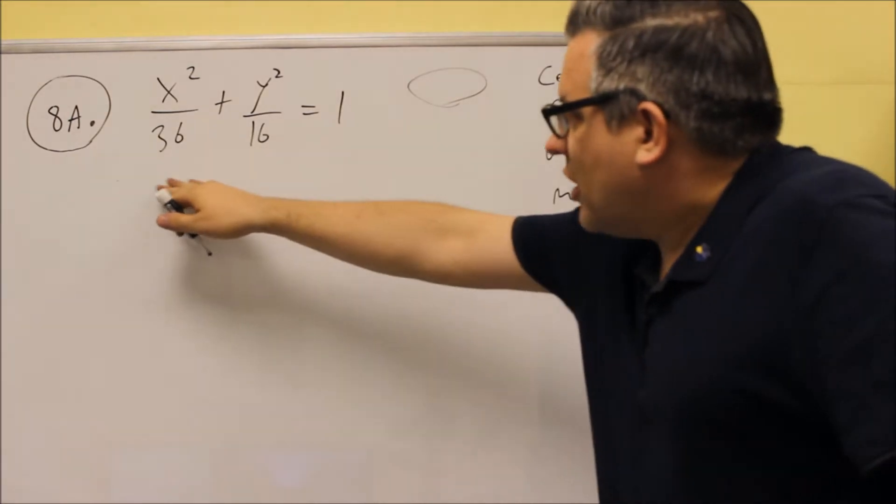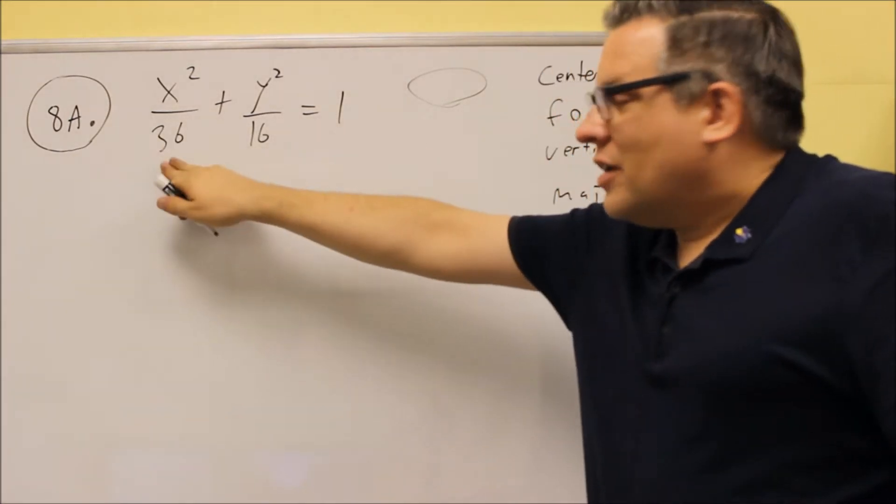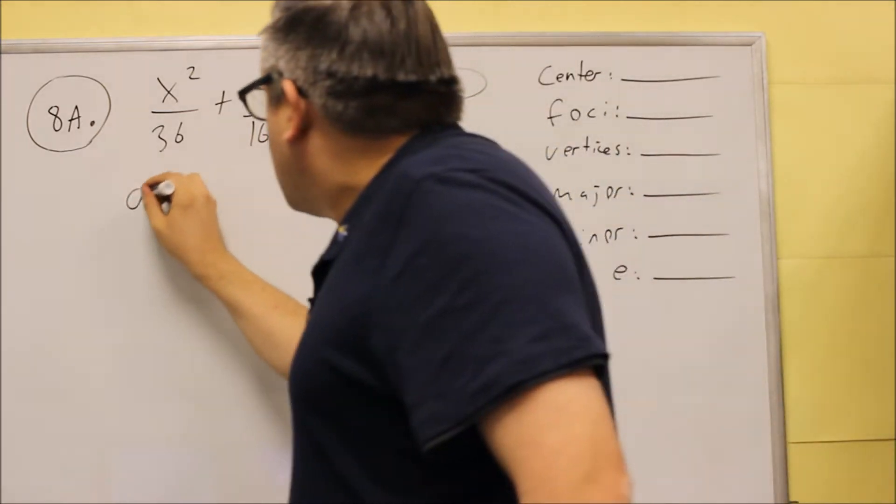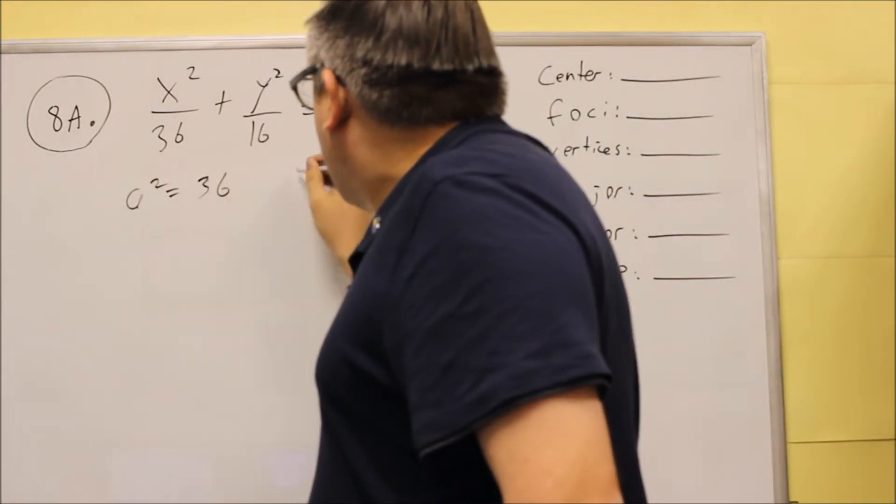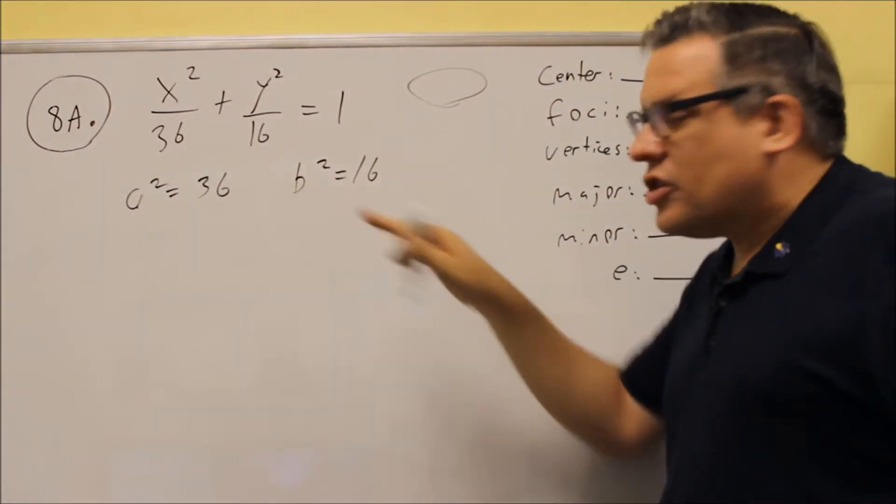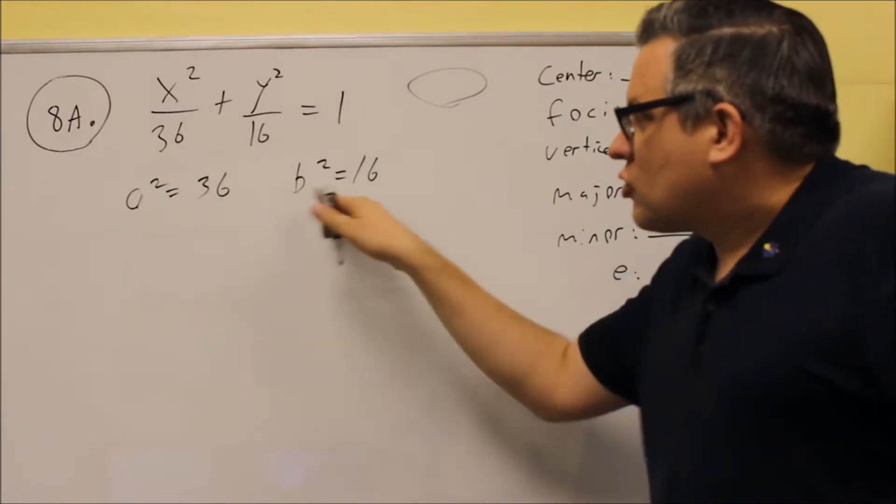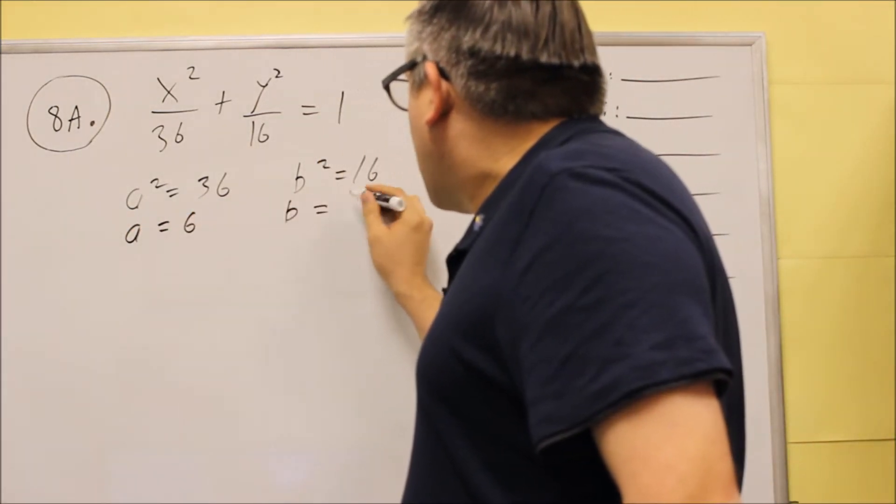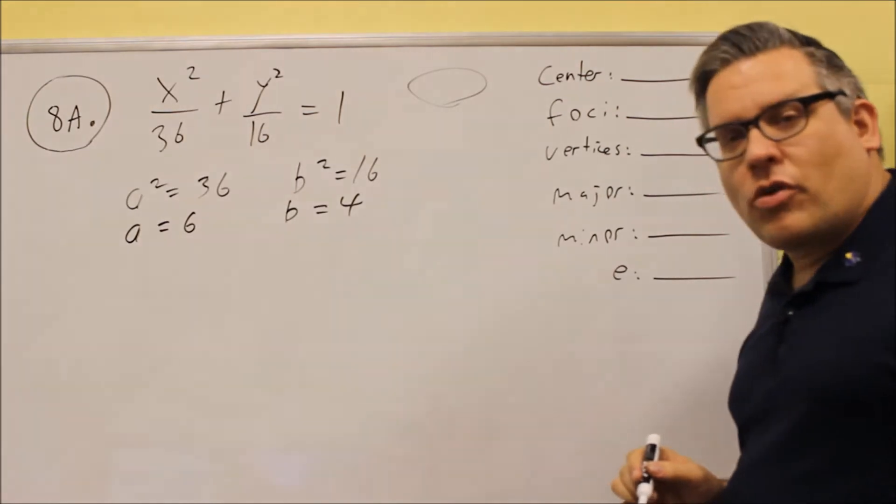The way the formula works, then, is if it opens up sideways, the number underneath is your a squared. The larger number is your a squared, so we set that equal. And we have the smaller number is equal to b squared. You want to take the square root of both of those. So we take the square root of both sides of each of those, and we get 6 and 4.